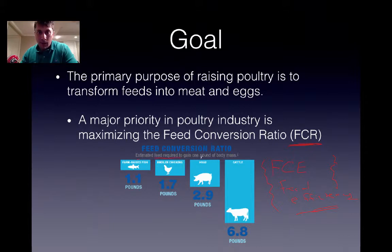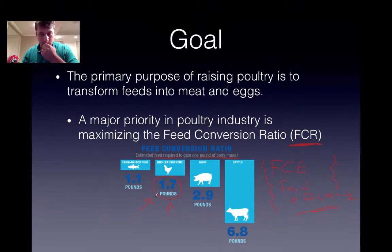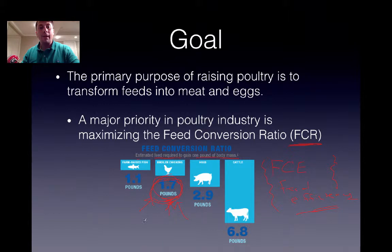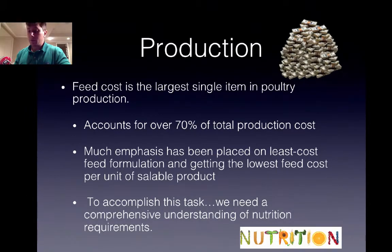The less feed you can give to get more sellable product, the more profitable you will be. FCR is the amount of feed required for one pound of body mass — less feed to get more gain means you want a lower number. For broilers, it's about 1.7 pounds of feed to produce one pound of body mass, which is very impressive. This also makes broiler the most ecologically and environmentally friendly meat, as it takes less input to produce the product.